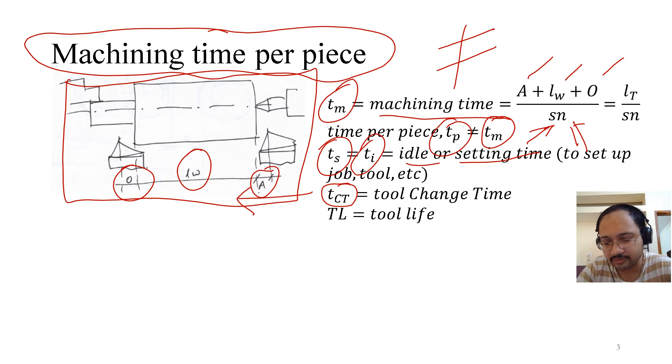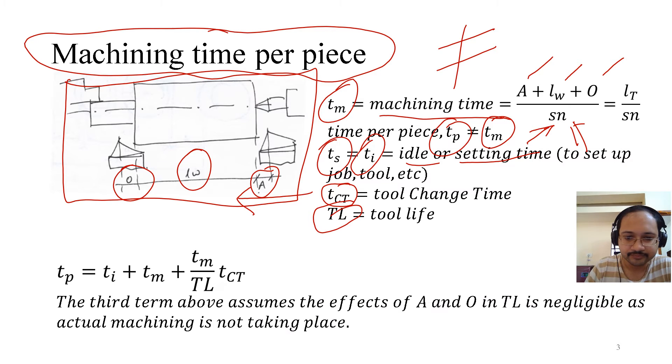Say first you need a facing tool, then you need a turning tool, you need a threading tool, like that. Then TL is the tool life. Now, the time per piece is essentially the idle time plus the machining time plus whatever time taken for the tool, time accounted for the tool change time, that is TM over tool life times TCT.